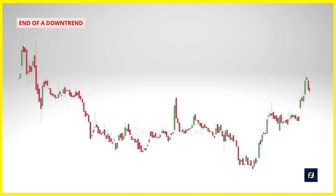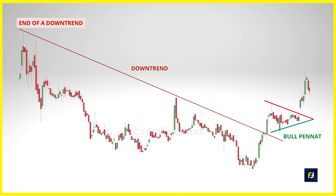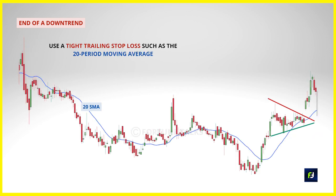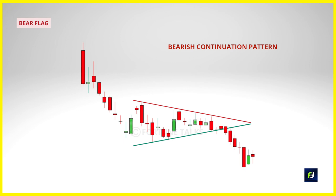Even in a downtrend, you can profit by using the bull pennant as a trend continuation pattern by analyzing market structure. First, the price must close above the downward trendline resistance — a break in the downtrend structure. Then, if price forms a bull pennant above this trendline resistance, you have a high-probability trade: you're trading between an ending downtrend and a potential starting uptrend. Entry, stop loss, and target conditions are the same, but use a tight trailing stop loss such as a 20-period moving average since you're taking a contrarian position.